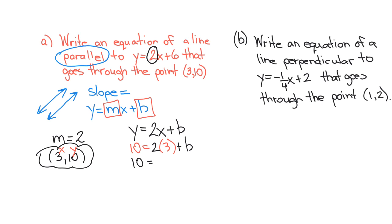So 10 equals 6 plus b. I want to isolate b. So this is a positive 6. So I'll subtract 6 from both sides using the subtraction property of equality. So the y-intercept is 4. So my equation is y equals 2x plus 4.